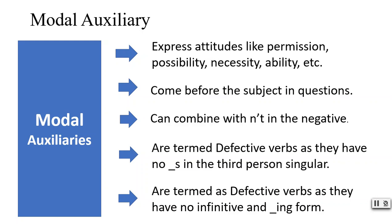Modal Auxiliaries express attitudes like permission, possibility, necessity, ability, etc. Modal Auxiliaries come before the subject in questions. They can combine with 'n't' in the negative. Modal Auxiliaries are termed defective verbs as they have no 's' in the third person singular, and no infinitive or '-ing' form.